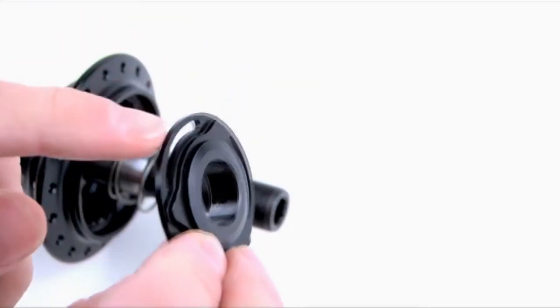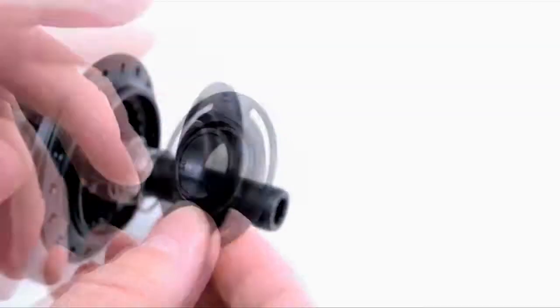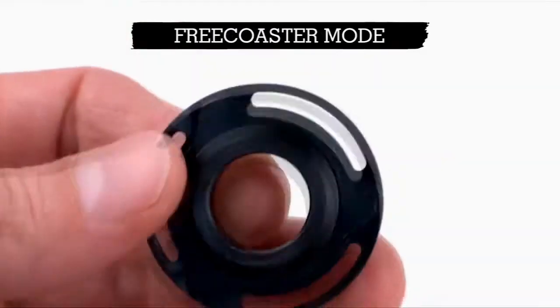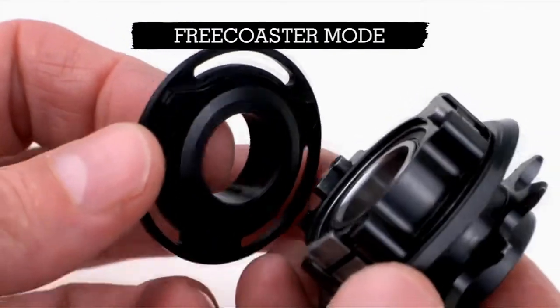Take the clutch disc and spacer and notice that there are two sides of the discs. In cassette mode, the ramps on the clutch disc should face toward the inside of the hub. When in Freecoaster mode, the ramps on the clutch disc should face toward the driver.